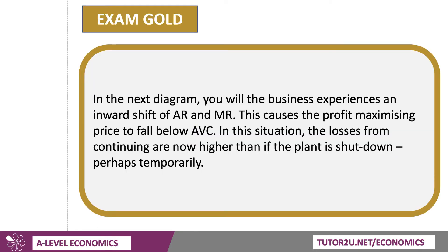In the next diagram, the business experiences an inward shift of average and marginal revenue. This causes the profit-maximising price to fall below AVC, so they're not even covering their variable cost of production. In this situation, the losses from continuing may be higher than if the plant is shut down, perhaps temporarily.